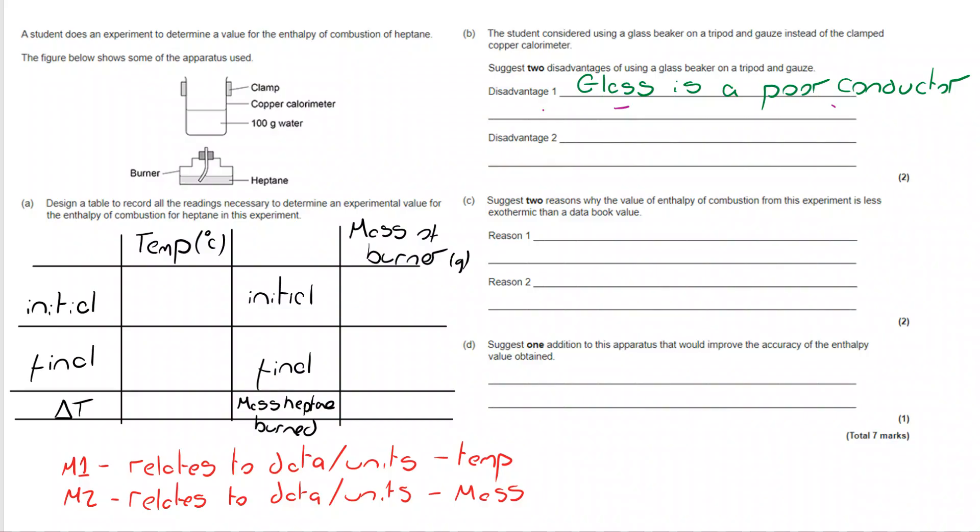In terms of alternative disadvantages you can have, the tripod and gauze would actually transfer some of the heat - they would take some of the heat energy in, which means it's not going to the water.